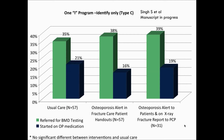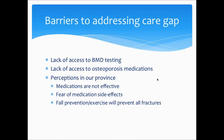We tried a 1i program — meaning a program that just identified patients — because we thought it would be the simplest way to do things, it would be cheap, and we could get it going quickly. However, like most of the research literature, it wasn't very effective. When comparing our usual care group to our group that received an osteoporosis alert in the fracture care patient handout, versus adding an x-ray fracture report to the primary care providers, we didn't see any difference in the number of patients referred for BMD testing or those started on osteoporosis medication.